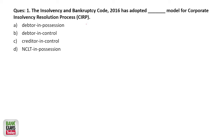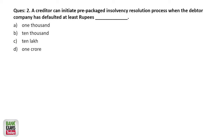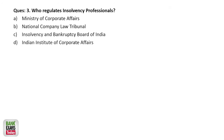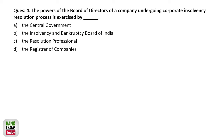Now let's cover some questions from previous exam papers. IBC has adopted a creditor-in-control model for CIRP. For PPIRP, which is an important amendment, the minimum default is 10 lakhs and maximum is 1 crore. The Insolvency and Bankruptcy Board of India regulates insolvency professionals. The power of the board of directors of a company undergoing the CIRP resolution process is executed by the resolution professional.